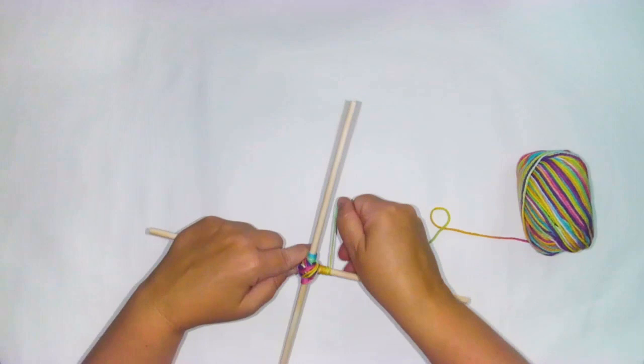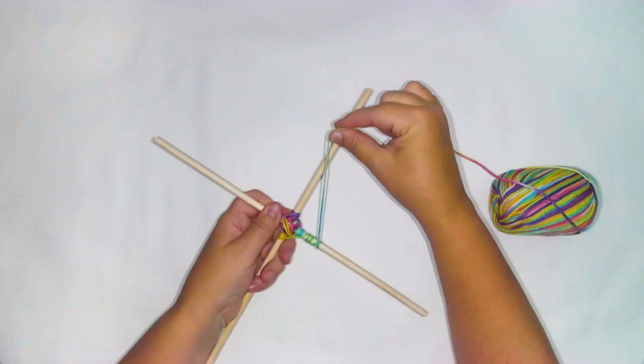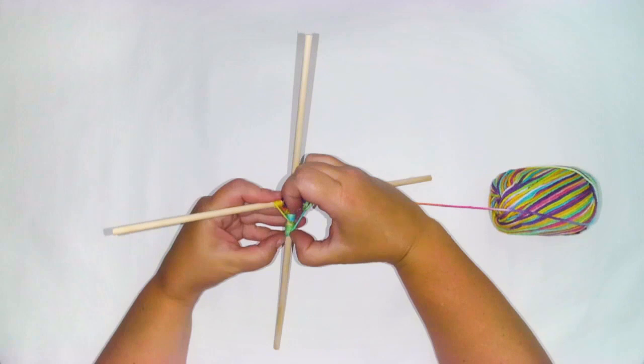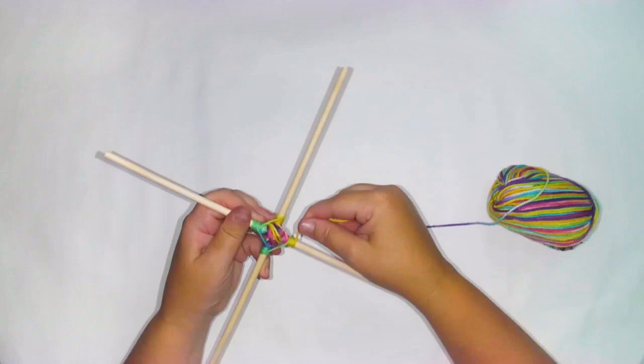As you're doing this weaving part, this will also help reinforce the structure and make it really nice, tight, and solid. You will notice that every time I move to the next dowel, my yarn is on top. I could do it where my yarn is on the bottom. The main thing is you want to keep it consistent when you place your yarn, whether on top or bottom, so that you get that beautiful even look at the end.